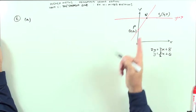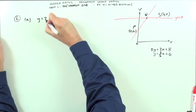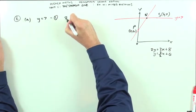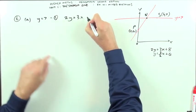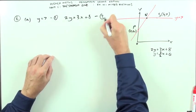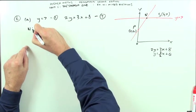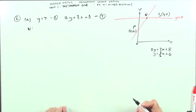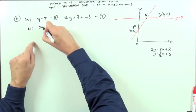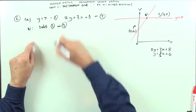For the centre of symmetry N, I've got these two equations: y=7 (equation 1) and 2y=3x+8 (equation 2). So the centre of symmetry, the intersection of the diagonals, will be substitute equation 1 into equation 2.